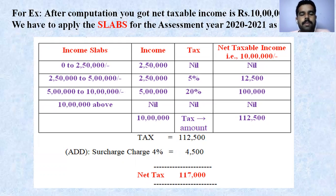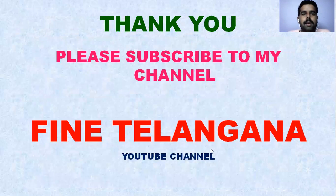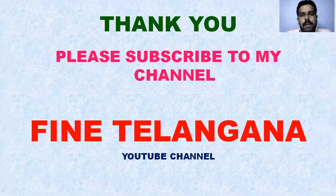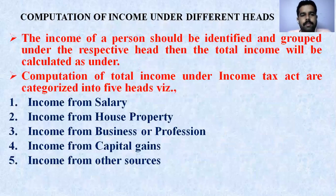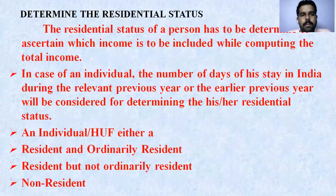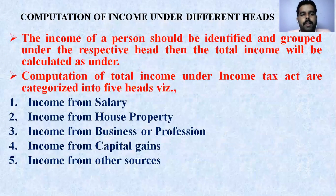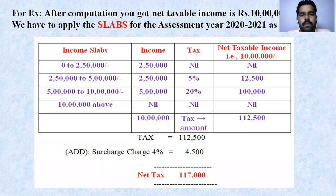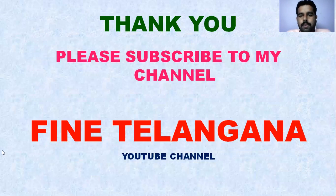I think you got an understanding of this problem. In the next class we are going to discuss each individual head in detail with amounts. Once again, to recap: determining the residential status is very important and is a deciding factor while calculating the total income of a person. These are the different heads, and this is the pro forma table. Thank you very much for watching — please subscribe to the channel.